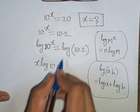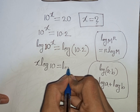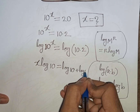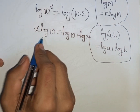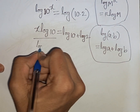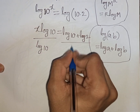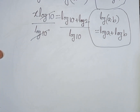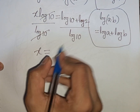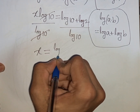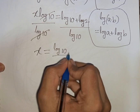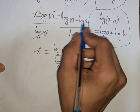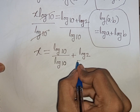So according to this formula, log of 10 times 2 becomes log 10 plus log 2. Now we need the value of x, so we divide both sides by log 10. We get x equals log 10 over log 10, plus log 2 over log 10.